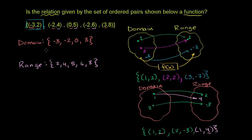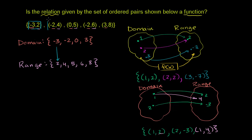Negative 3 is associated with 2 — it maps to 2 based on that ordered pair. Negative 2 is associated with 4 based on the next ordered pair. Zero is associated with 5. Now negative 2 is mapped to 6 as well. This is interesting — negative 2 is already mapped to something, and now this ordered pair says it's also mapped to 6. Finally, 3 is mapped to 8.